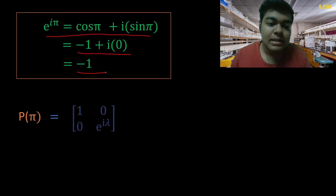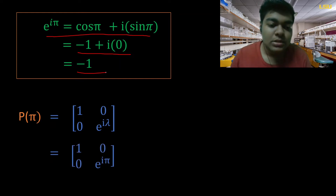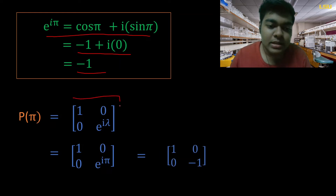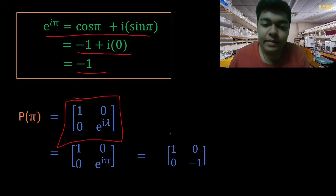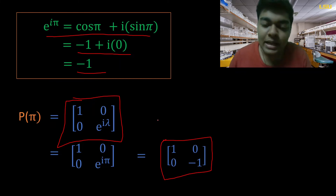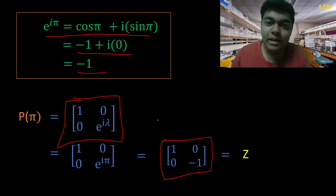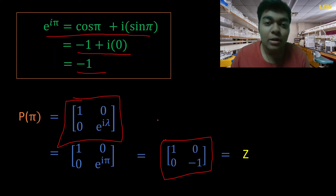Plugging this value into the matrix from the general case with λ = π, the resulting matrix is nothing but the Pauli-Z operator that we have studied previously. It turns out that the Pauli-Z operator was just a special case of this phase gate.